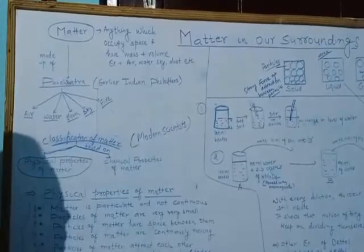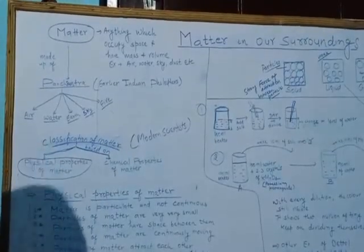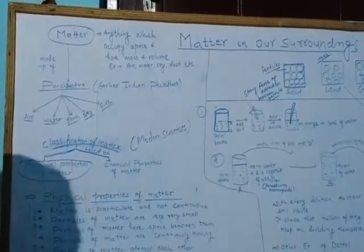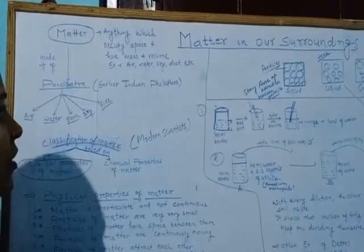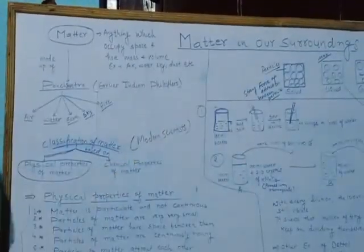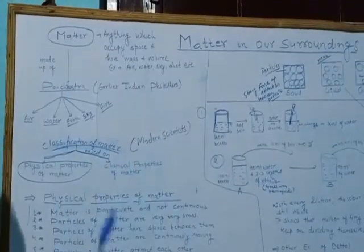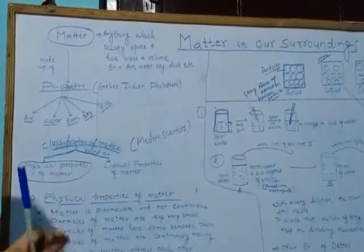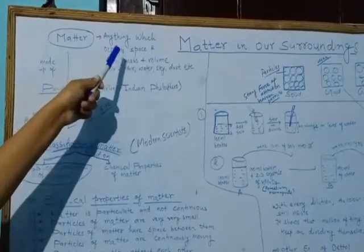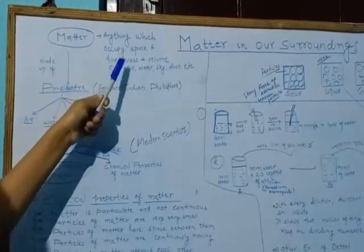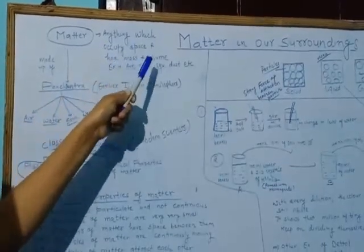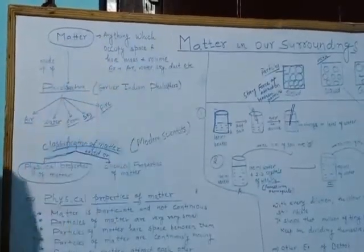Hello students, this is your first chemistry chapter in class 9 science: Matter in Our Surroundings. First, we should know what is matter. Matter is anything which occupies space and has mass and volume.